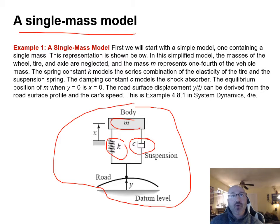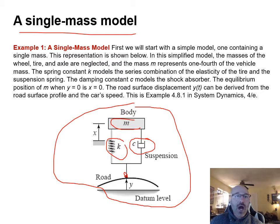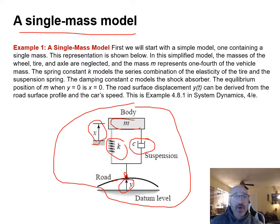The suspension is fitted to a wheel whose contact point on the road is marked with a dot. That contact point is at height y on a positive slope of the road. The body will move up a vertical distance x from its original position as the wheel travels up the positive slope.